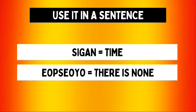This sentence can be divided into two parts. The first is Shigan, which means time. And the second part is Opsoyo, which is actually the conjugated version of Opda. Opda is not yet conjugated, so when it is conjugated into its present tense form, it becomes Opsoyo. Opsoyo is the present action or present state of having none. So when we combine Shigan and Opsoyo, it means there is no time, or if you're saying Shigan Opsoyo to someone, you're more likely saying I have no time.